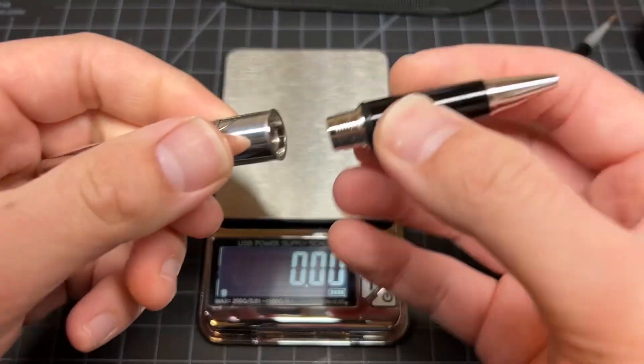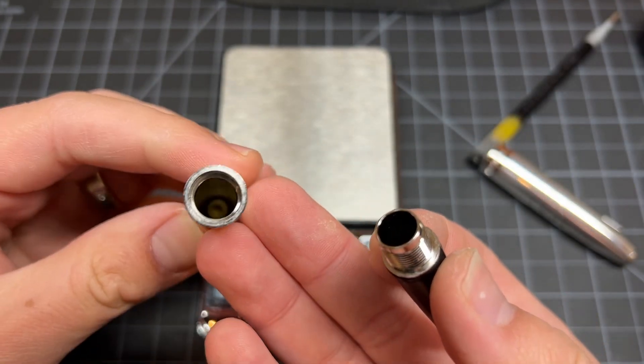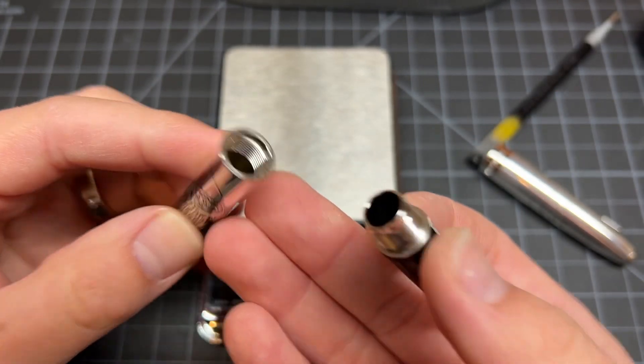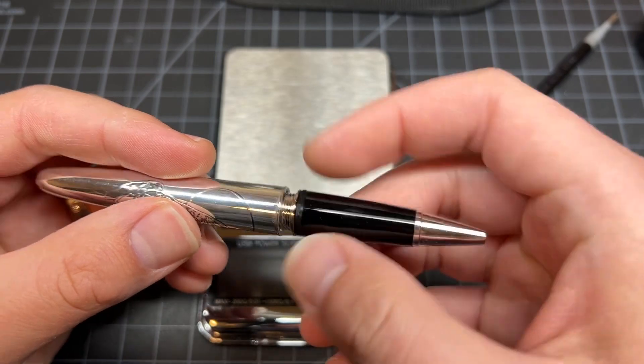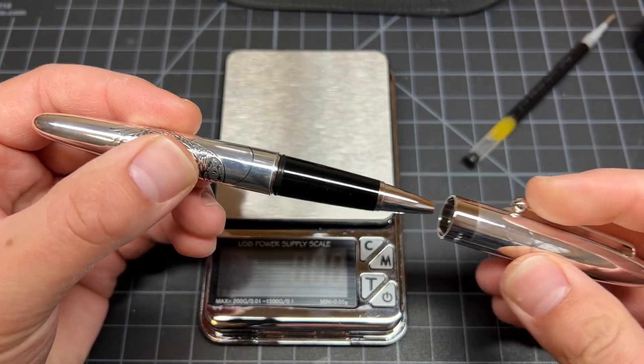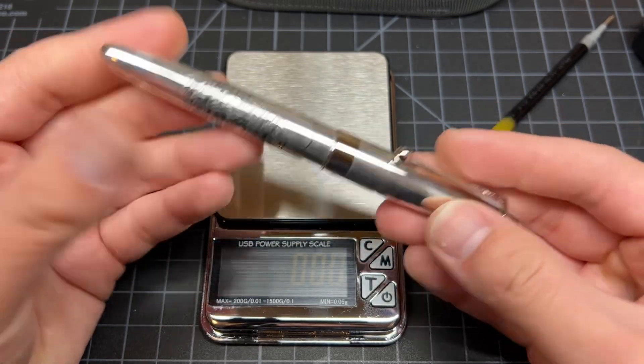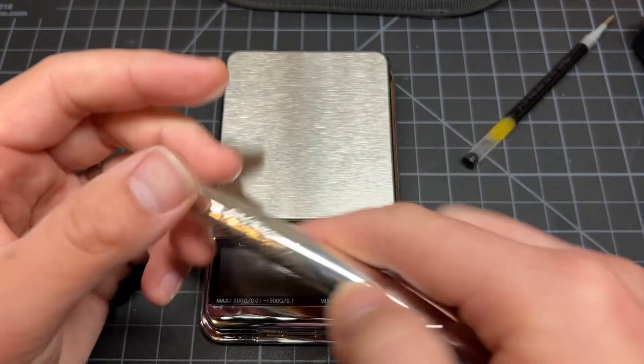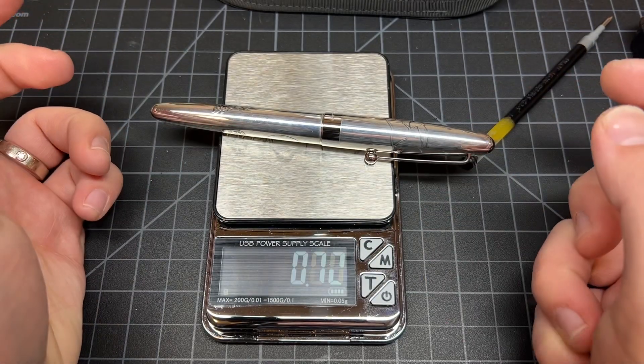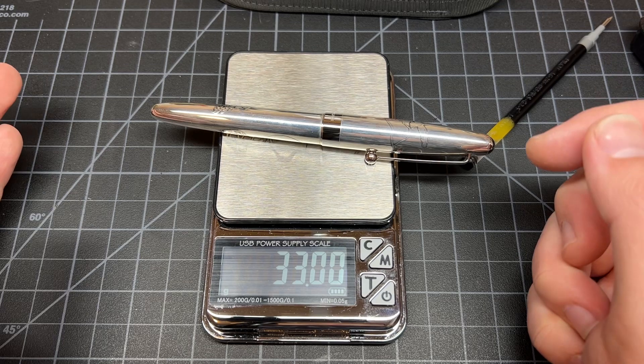This is a Pilot G2 refill. Here's the inside of the pen. It's actually not as heavy as one may think, because it is sterling silver, but it's still not extremely heavy. Now, we got 33 grams.